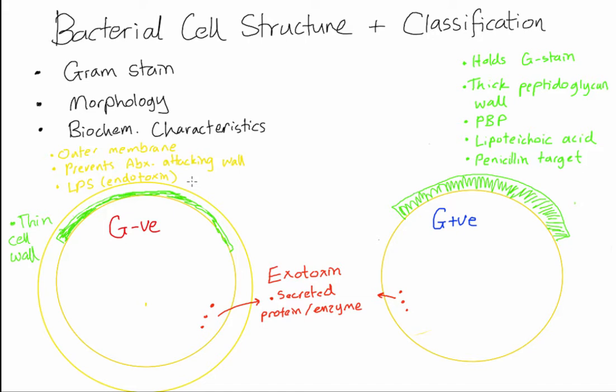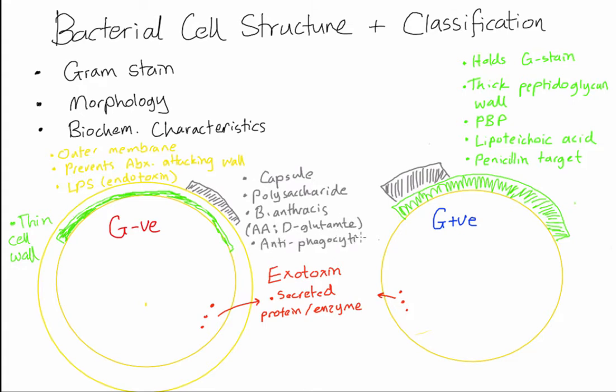Okay, so outside the outer membrane in the gram negative or outside the cell wall in gram positive, there's another structure called a capsule. Now the capsule is made up of polysaccharide. Its function is to prevent phagocytosis of the cell, so it's a virulence factor. You need to remember one exception which is in Bacillus anthracis, the capsule is made of amino acids specifically D-glutamate.